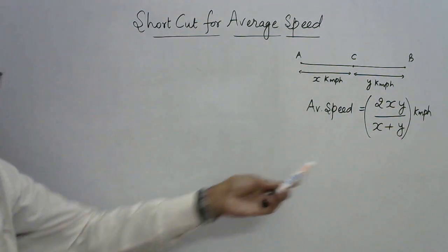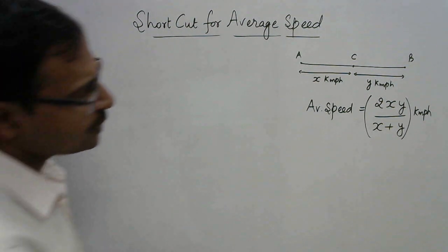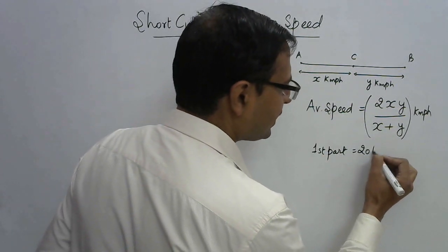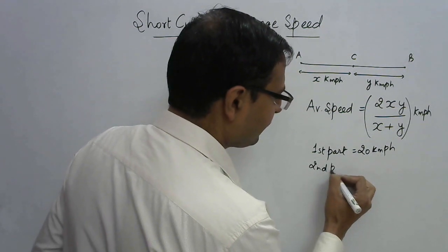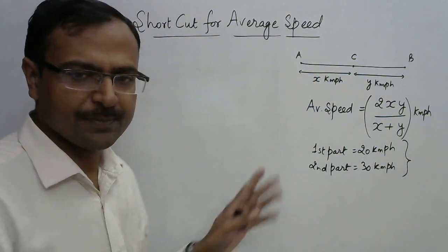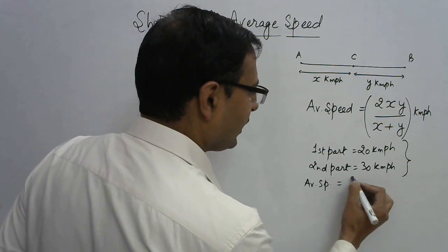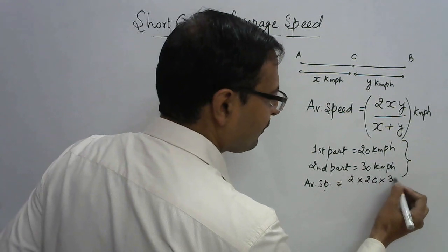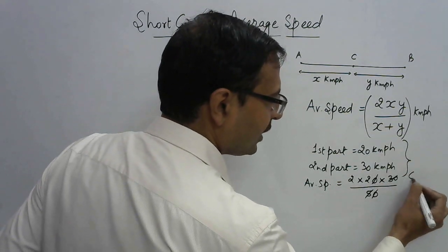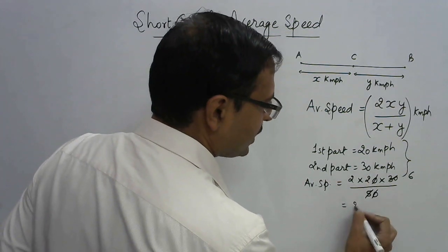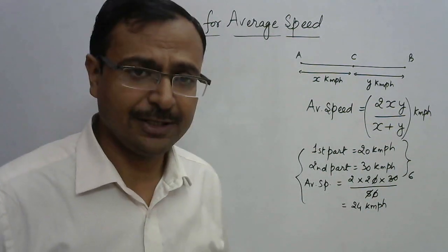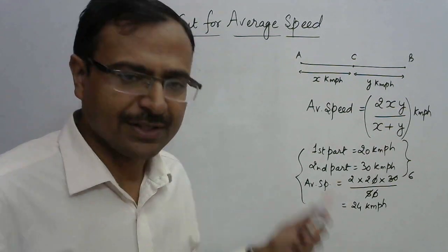Just to verify, suppose the first part of the journey is covered at a speed of 20 kmph and the second part at 30 kmph. The average speed will be directly 2 times the product of 20 and 30 divided by the sum of 20 and 30, that is 50. So 1200 divided by 50 — the zero gets cancelled, 5 cancels 6 times — giving 24 kmph as the direct answer. This consumes only 2 to 3 seconds; you don't even need pen and paper.